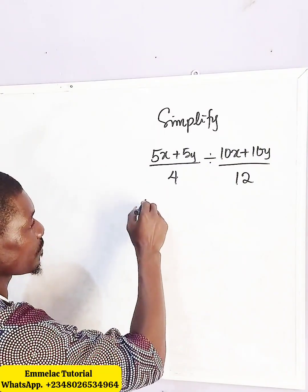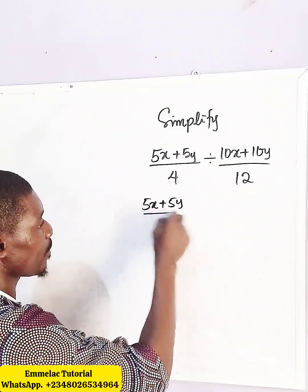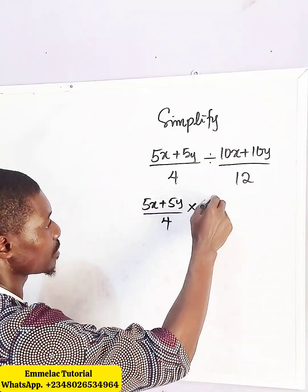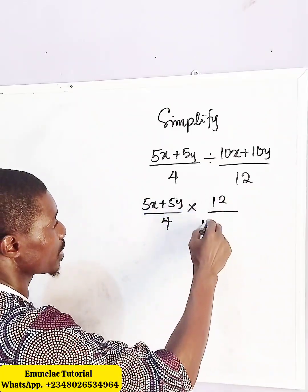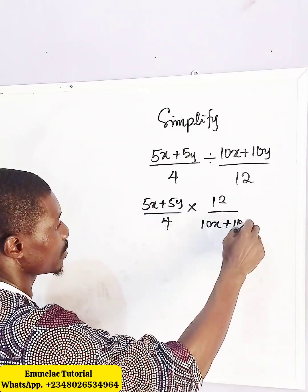So here we have 5x plus 5y all over 4 times 12 all over 10x plus 10y.